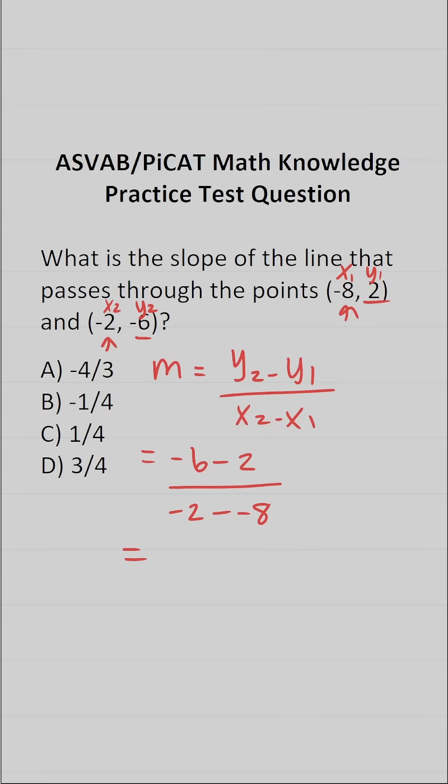-6 minus 2 is going to be -8. -2 minus -8. Minus minus becomes plus. So this is the same thing as -2 plus 8, which is going to be positive 6.